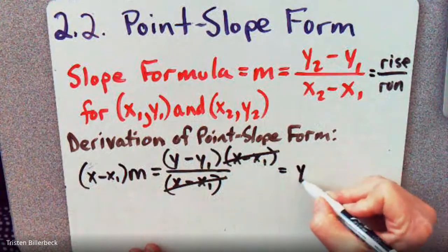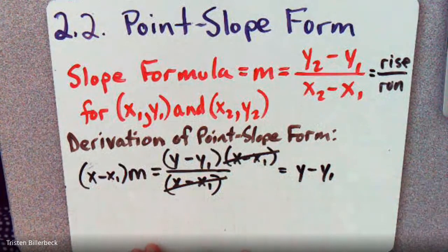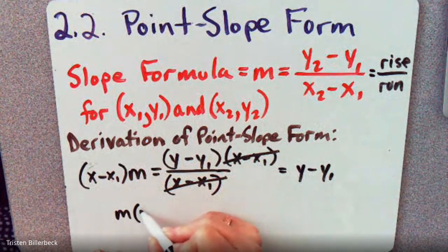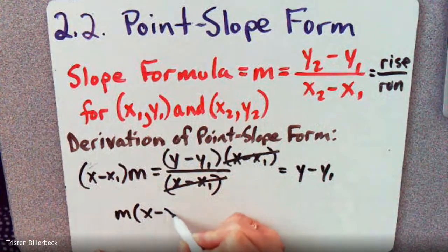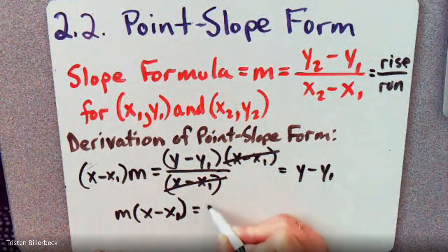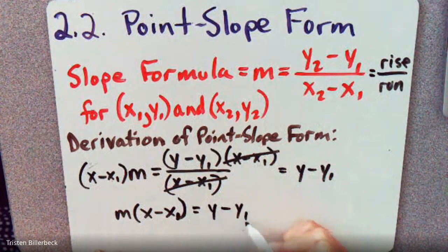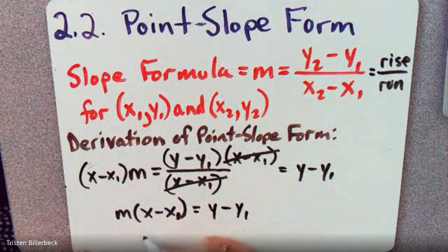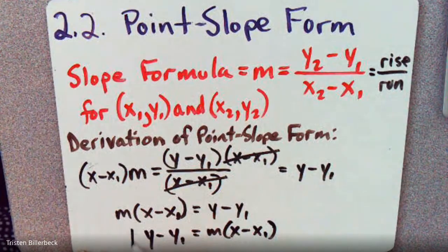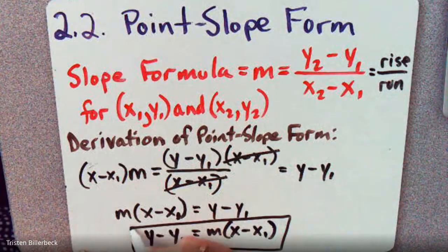And what that does is it gets rid of the denominator. So then we have Y minus Y1. If we rearrange this using the commutative property, we have M times X minus X1 equals Y minus Y1. And then to use the reflexive property, we just have Y minus Y1 equals M times X minus X1. And there we have the Point-Slope Form.